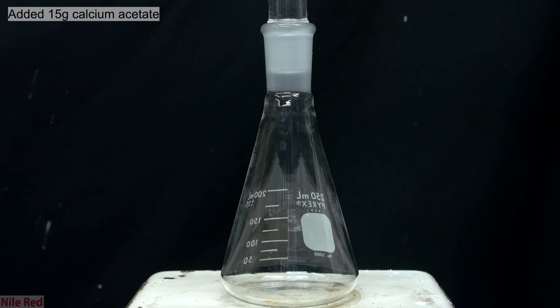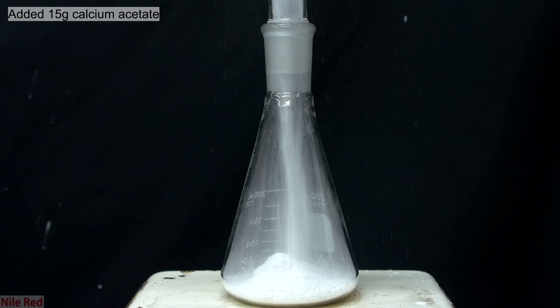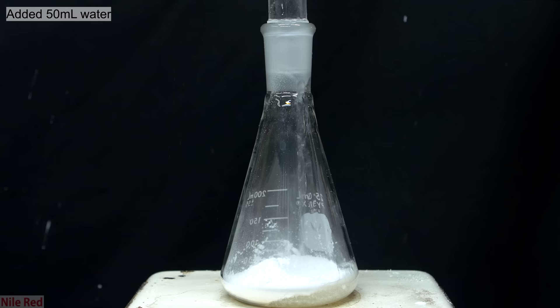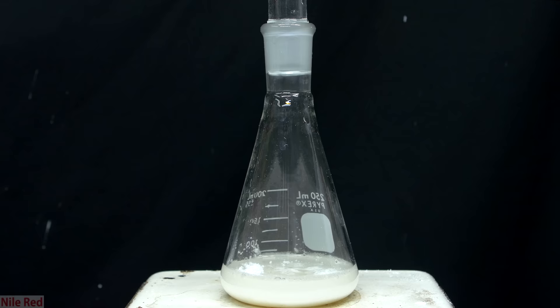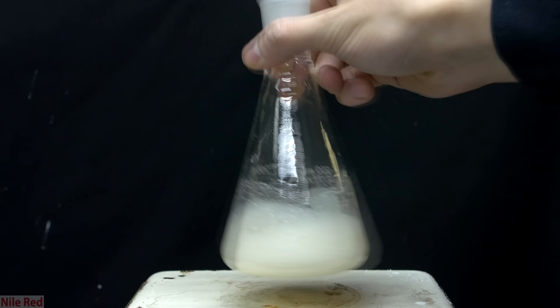To start off, I put about 15 grams of calcium acetate into an Erlenmeyer flask, but in theory I could have used any plain old cup. On top of the calcium acetate, I poured in about 50 milliliters of distilled water. Our goal here is to make a fully saturated solution of calcium acetate, so it makes sense that there'll be some leftover undissolved.